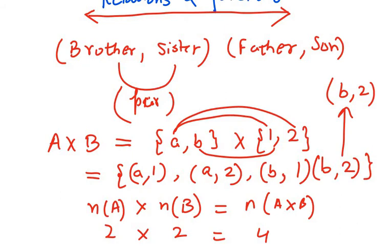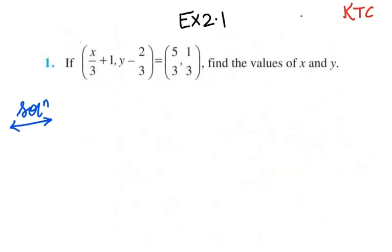Now starting with question number 1, exercise 2.1. It says if (x/3 + 1, y - 2/3) = (5/3, 1/3), find the values of x and y. Now we have here our ordered pairs. Therefore we can say the first value equals the first value of second and the second value of first equals second.